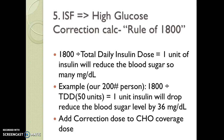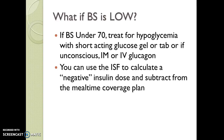Think about how hard this math would be for a patient with low literacy or less educational background. If the blood sugar is low, a different set of rules apply. Blood sugar under 70 in all populations is treated for hypoglycemia — either the patient treats themselves with short-acting glucose gel or tabs, or if unconscious, someone else treats them with intramuscular or IV glucagon. You can also use the ISF to calculate a negative insulin dose and subtract from the mealtime coverage. If their sugar was a little low and you wanted to back off, you might reduce their planned dose by one unit for a 200-pound patient who is 36 mg/dL below target.